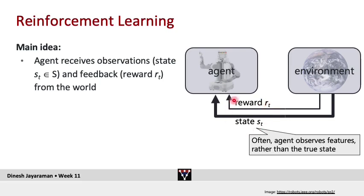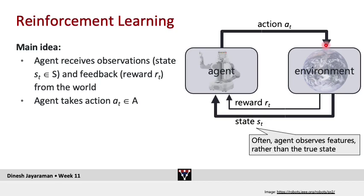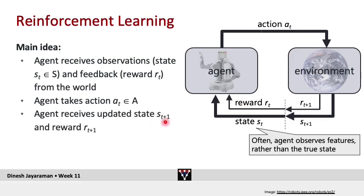Once the agent has received reward RT and observed state ST — remembering the reward is only occasional, so there might be time instances T where there is no reward — the agent at time T emits an action AT into the environment. Think of this as a turn-by-turn abstraction: the agent executes an action, then gets feedback and sees how the environment changed in response, and then in the next turn executes another action, receiving updated state ST+1 and new reward RT+1.